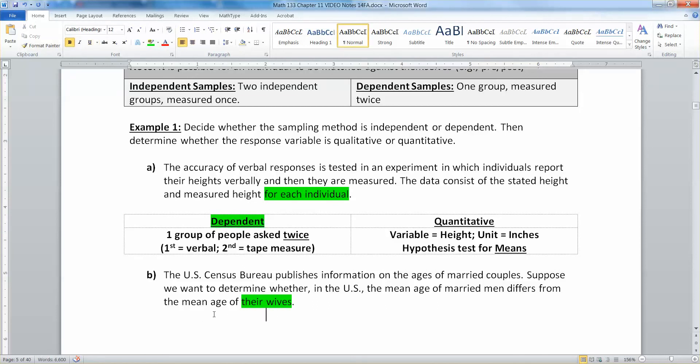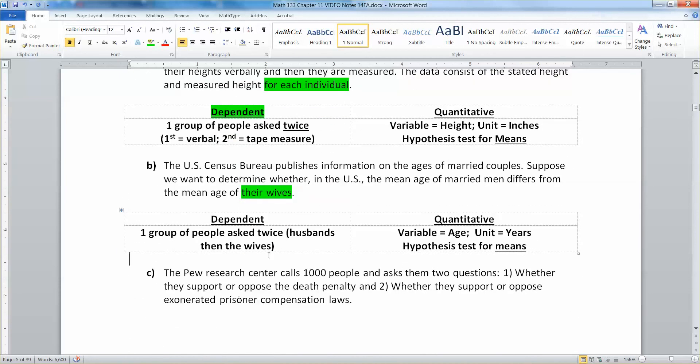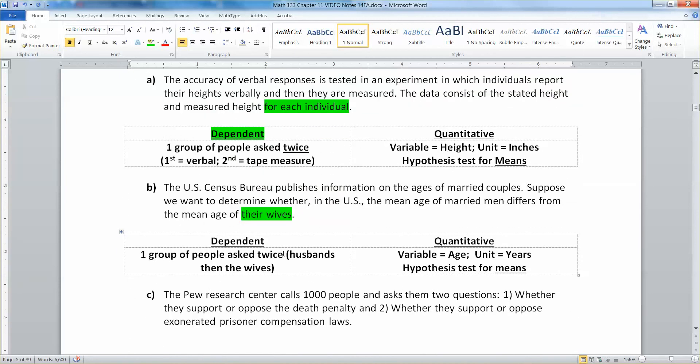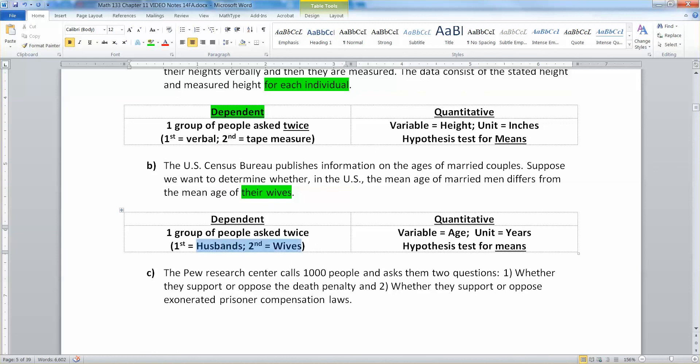So since it's their wives, that's a dependent sample. Husbands and wives are not independent of each other. That's kind of the point of marriage last time I looked. So it's one group of people asked twice. The husbands would be the first group, and then the wives of the second group. And then they're measured against each other and they're not independent of each other, because they're married.